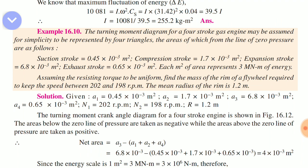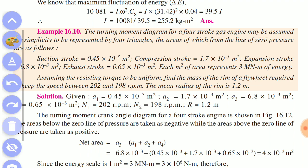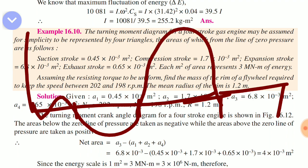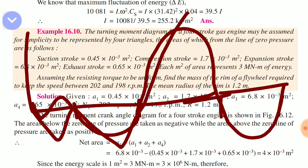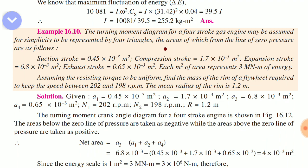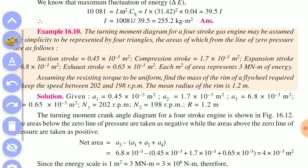The turning amount diagram for a 4-stroke gas engine may be assumed for simplicity to be represented by four triangles. A four-stroke engine has four strokes: suction, compression, expansion, and exhaust. The areas of which from the line of zero pressure are as follows: suction stroke 0.45×10⁻³ meter square.